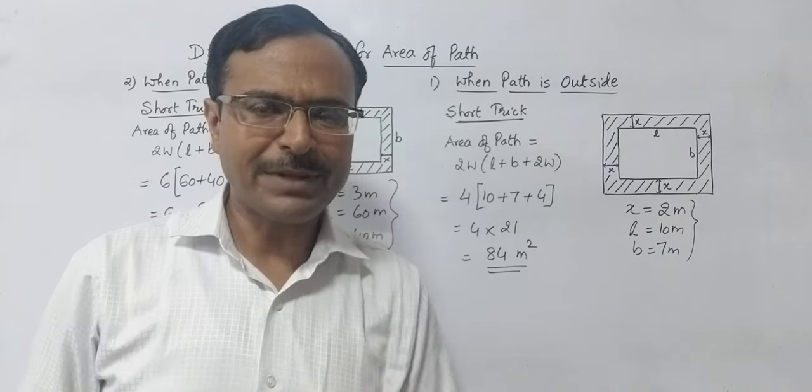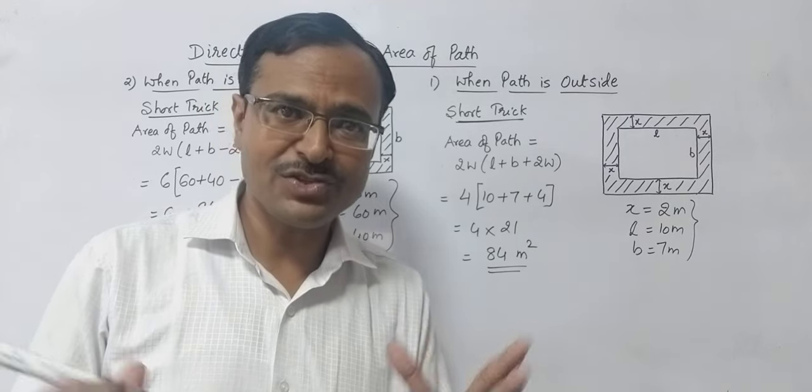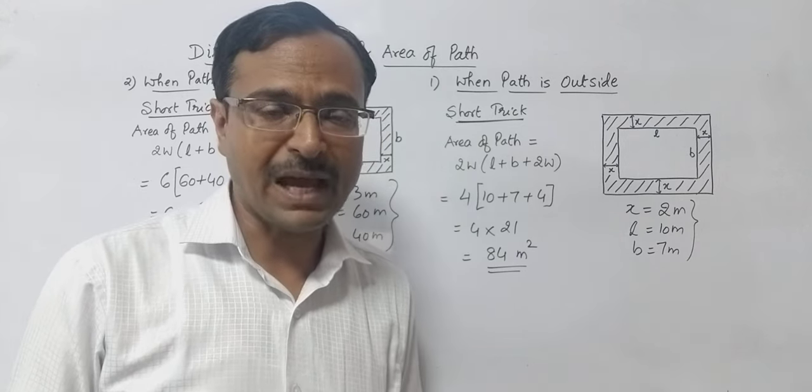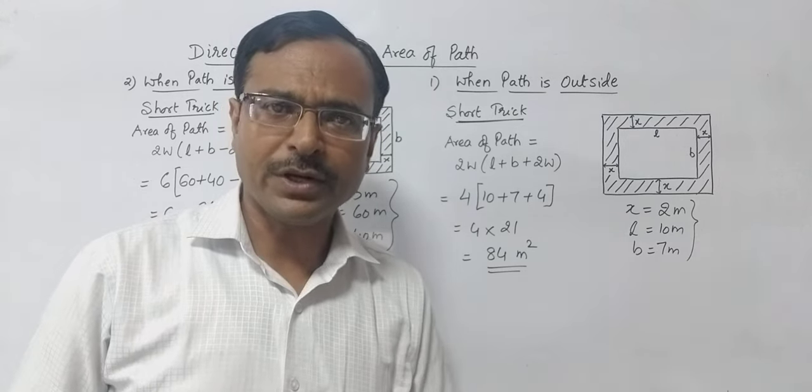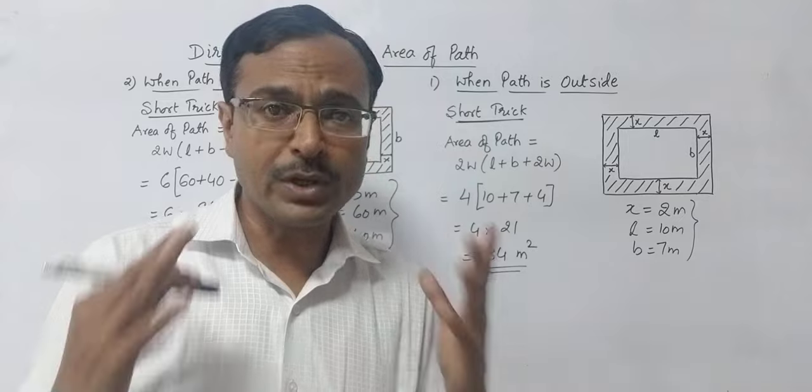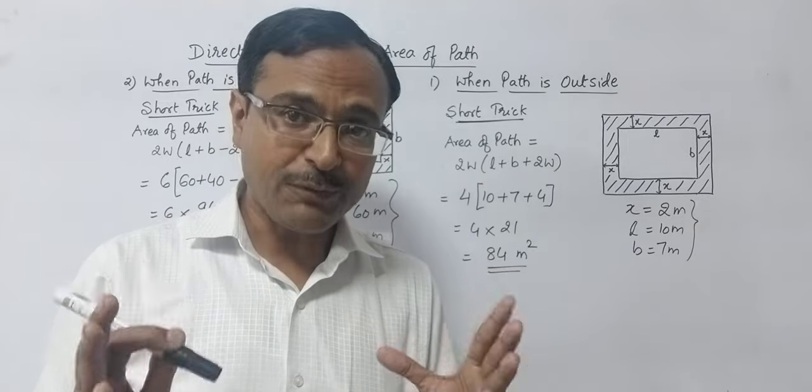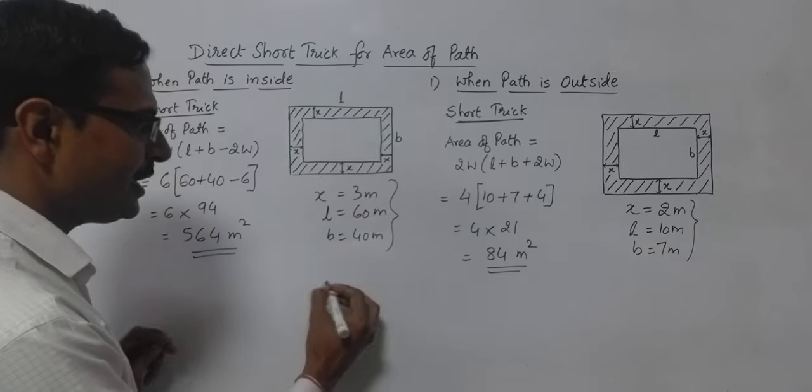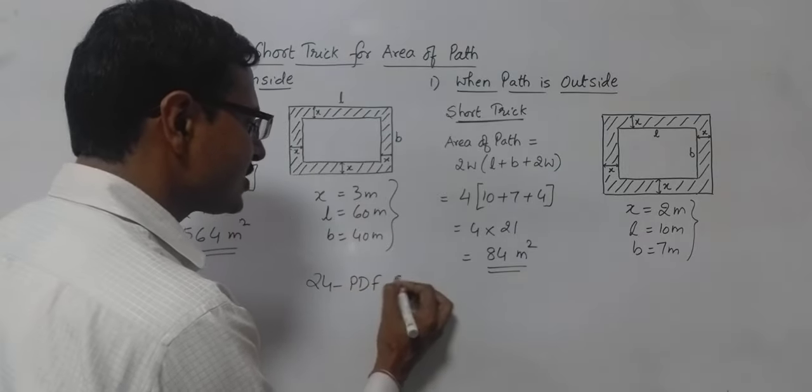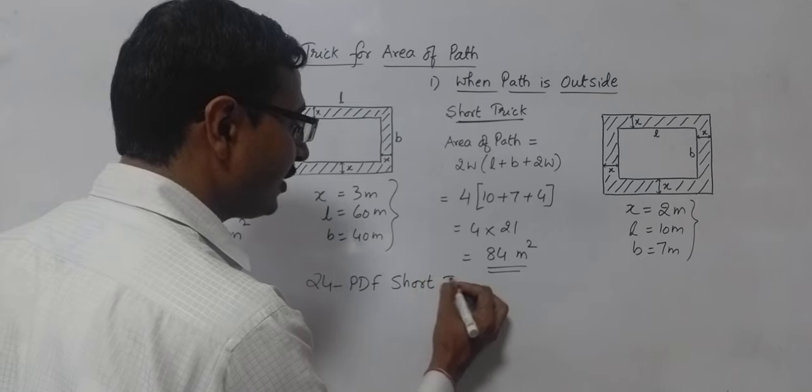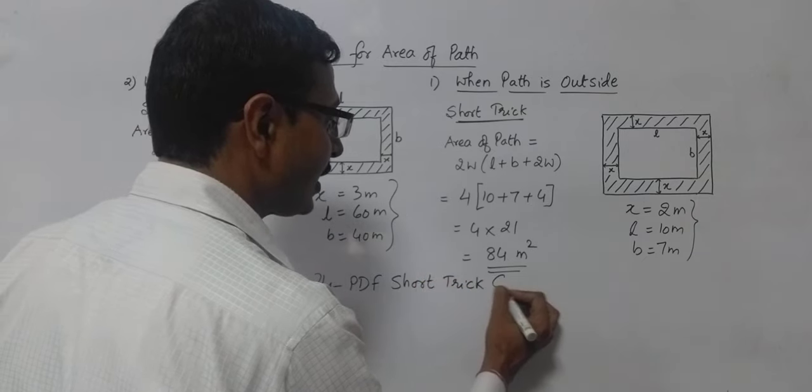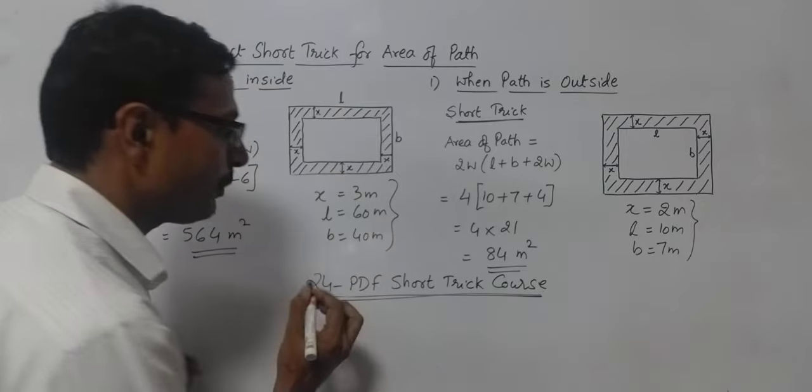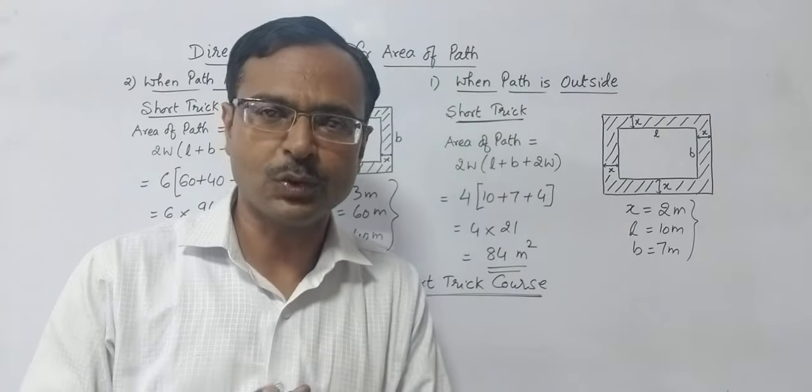And if you want to develop that speed for success in SSC CGL, CHSL, all exams, RRB, NTPCs, Bank PO, all these quantitative aptitude exams will become so easy for you if you go for the 24 PDF course which I have launched. So all these are mentioned in the 24 PDF short trick course and over 350 short tricks are mentioned in this particular course. And you need to get a copy of this very nominal cost of the course.